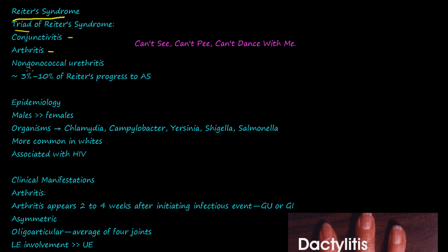Three to ten percent of Reiter's patients progress to ankylosing spondylitis, which we talked about in the last video. The mnemonic is: can't see, can't pee, can't dance with me. So if the patient can't see, is having problems with urination, and can't walk or dance, they probably have Reiter's.